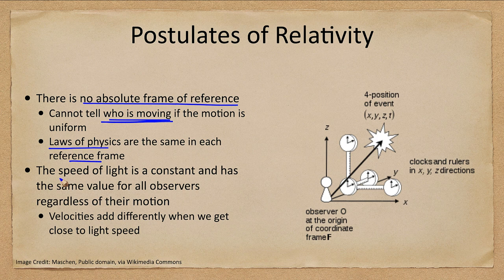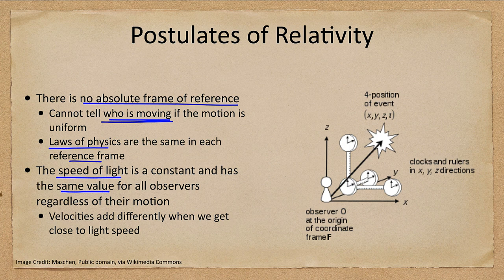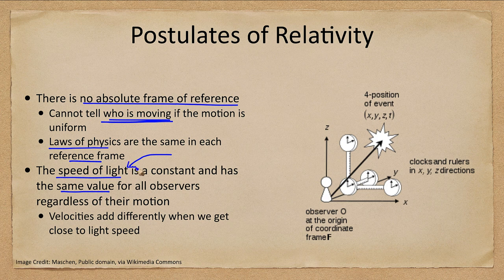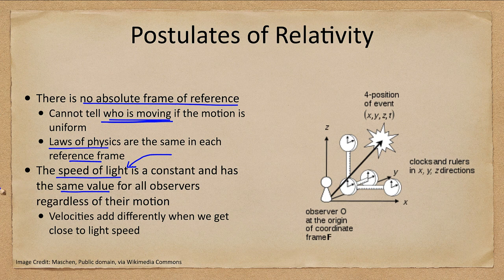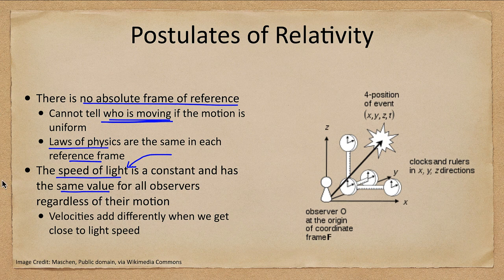The second postulate is that the speed of light is a constant and has the same value for all observers - 300,000 kilometers per second. This refers specifically to the speed of light in a vacuum. It doesn't matter if the observer is moving; the speed of light will still be constant.